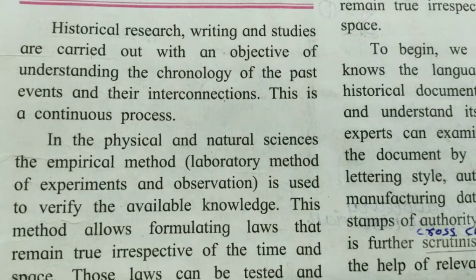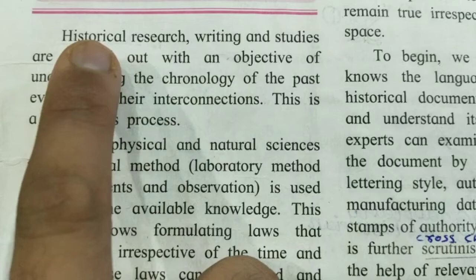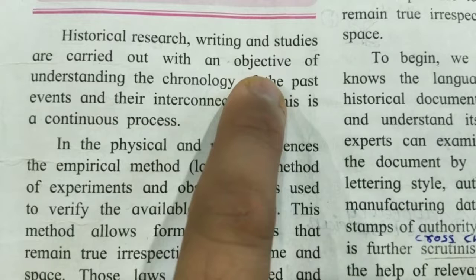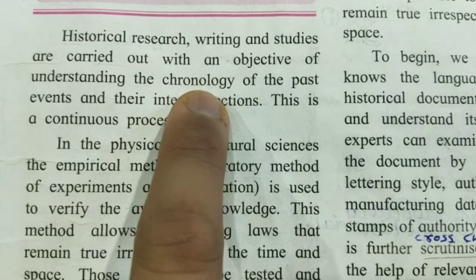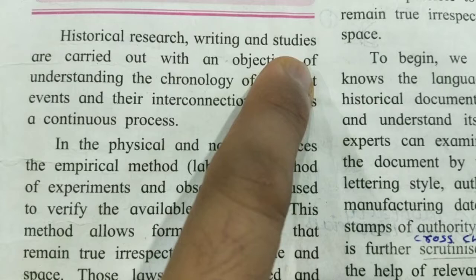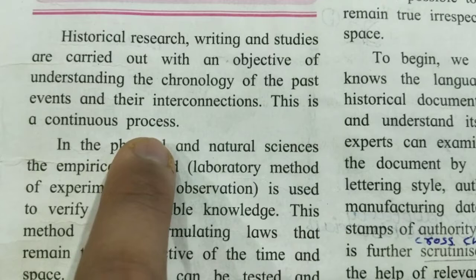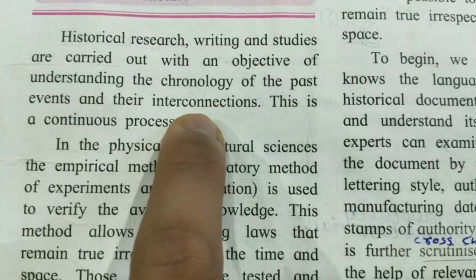Historical research, writing, and studies are carried out with the objective of understanding the chronology of past events and their interconnection. Whatever historical research, writing, or study is done — it is for understanding the chronology of past events: what happened first, what happened after, in proper order — and their interconnection with each other. This is a continuous process.